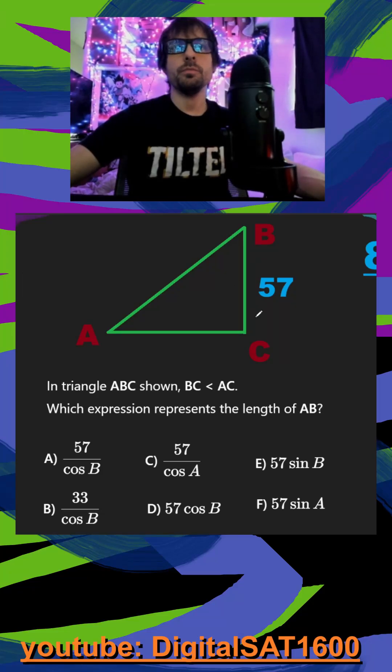In triangle ABC shown, BC is less than AC. Which expression represents the length of AB? We'll just call that H. And what's nice is we have a leg and a hypotenuse, so we're not going to be dealing with tan, which would only be our two legs.